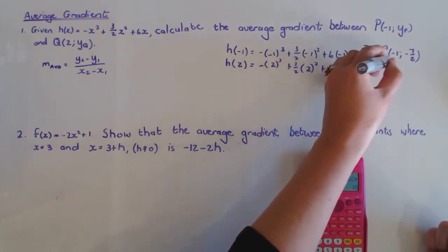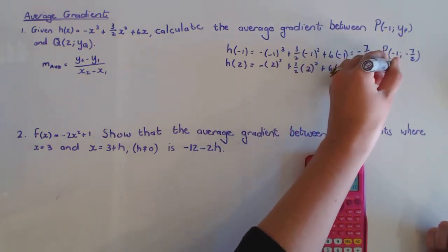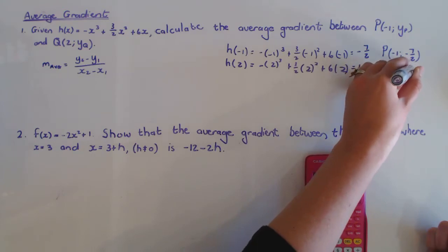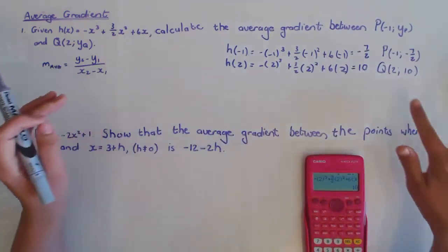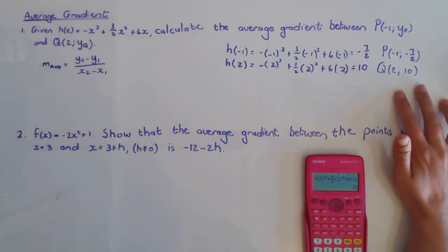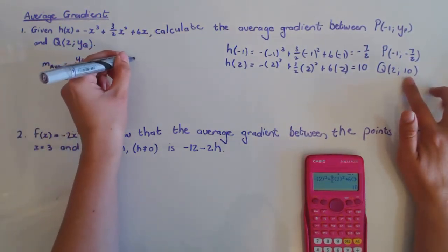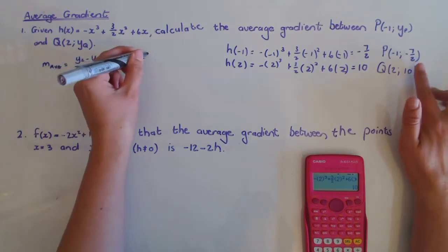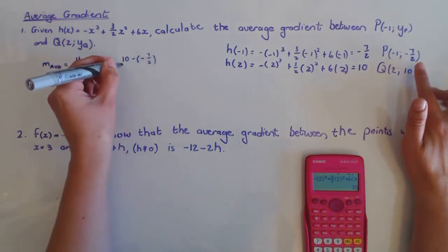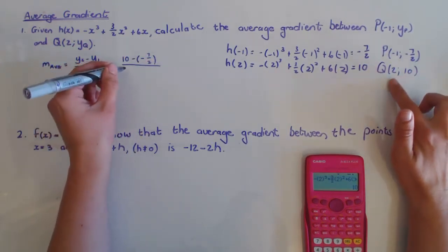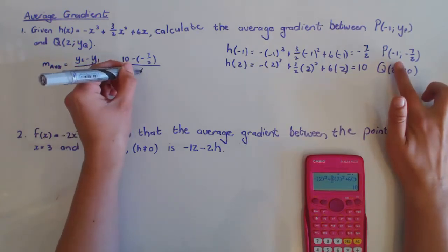So then I have the point Q, which is (2, 10). And then I can just actually find the gradient between these two points. So I'm going to do the difference between the y's, which is 10 subtract -7/2, over 2 subtract -1.